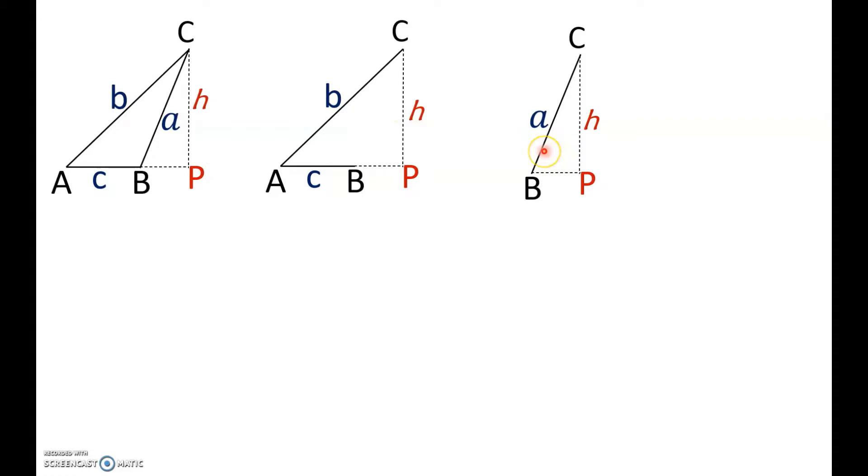Now, we're going to apply the sine rule for the first one. Or rather, we're going to find the sine of A for the first triangle. So, sine A would be equal to H, which is opposite side, over B, which is the hypotenuse. So, H over B. Simplifying this further, we can say H is equal to B times sine A.